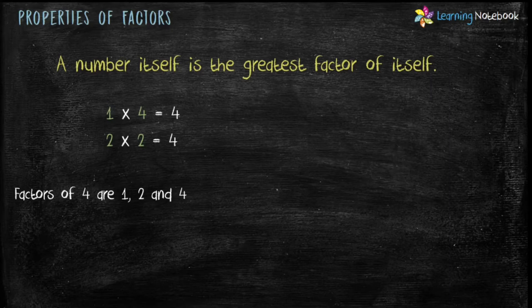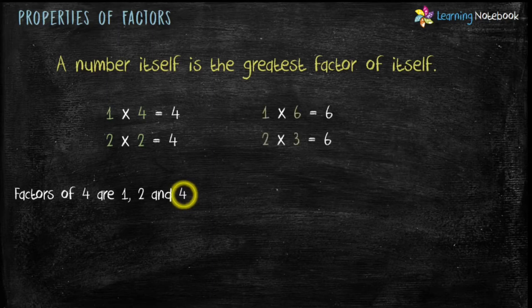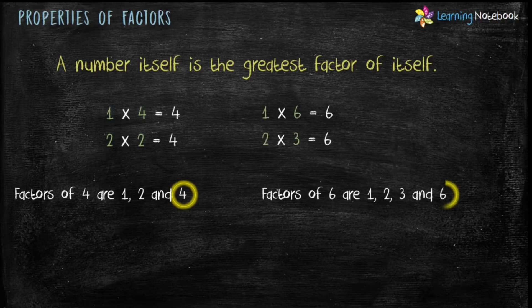In this example the greatest factor is 4, which is the number itself. Let's take one more example: factors of 6 are 1, 2, 3, and 6. Again the greatest factor is 6, which is the number itself.